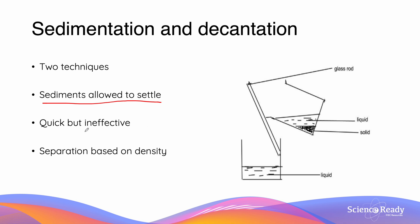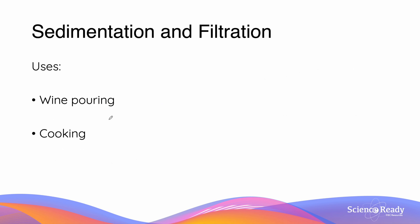This is a quick method which we can use to separate our mixture, but it's ineffective. The limitations of this include how it is easy to pour out accidentally some of the unwanted solid along with the liquid. This separation technique is based on solubility, but primarily it is based on density. Because of the quickness of the sedimentation and decantation method, it can be found in use when wine pouring or in cooking.